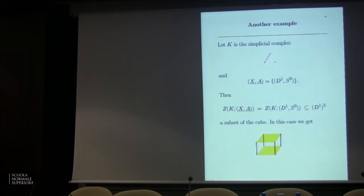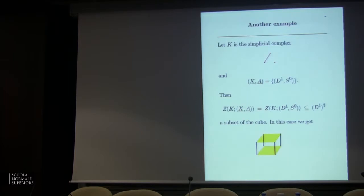There are papers about polyhedral products where the first entry is the classifying space of a discrete group and the second is a point, giving results about free groups. If you take X = CP^infinity and A = point, the cohomology of that space realizes the Stanley-Reisner ring of the simplicial complex. Using these spaces you can realize the cohomology of a large family of monomial ideal rings. They're ubiquitous.